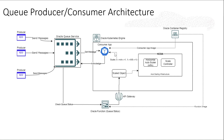We will also see how consumers scale up based on the queue size. Queue size is checked using an Oracle Function, exposed via an API Gateway, which calls the queue status API of Oracle queue service. Based on the number of messages in the queue, we scale the consumers. The consumers are scaled using a metric-based scaler called KEDA — Kubernetes Event-Driven Autoscaler — which scales the number of pods from one to n based on a defined limit.